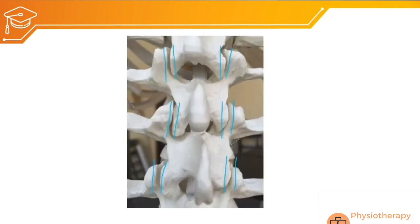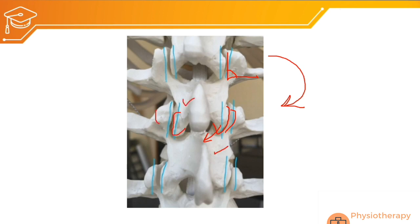For rotation, because the facet orientation is nearly 90 degrees to the horizontal plane and faces sagittally, rotation is minimal — only about 0 to 3 to 18 degrees total. When rotating to the right, on the same side the inferior articulating facet slides posteriorly, while on the opposite side it slides slightly anteriorly. This sliding across L1 to L5 collectively produces the small rotation range.